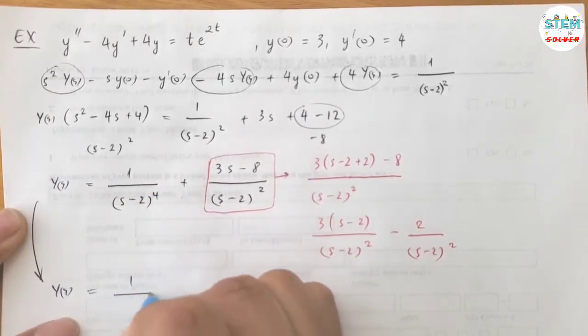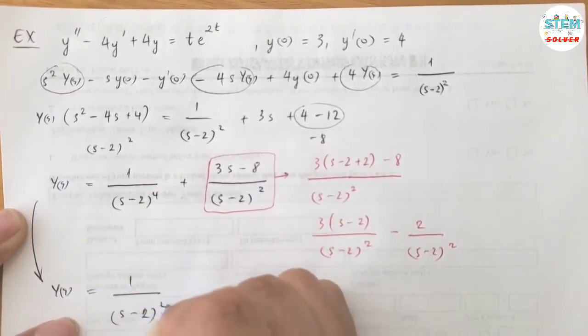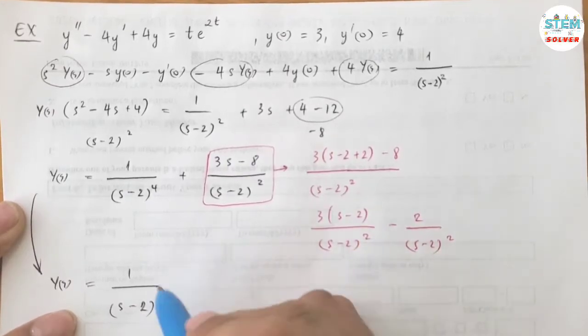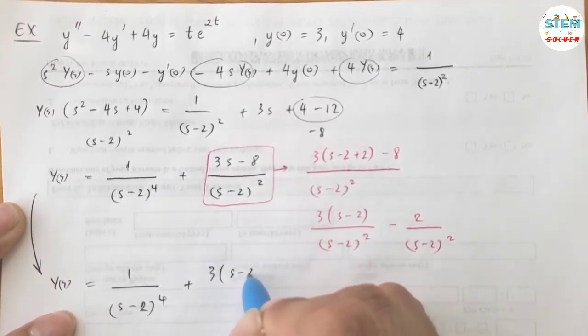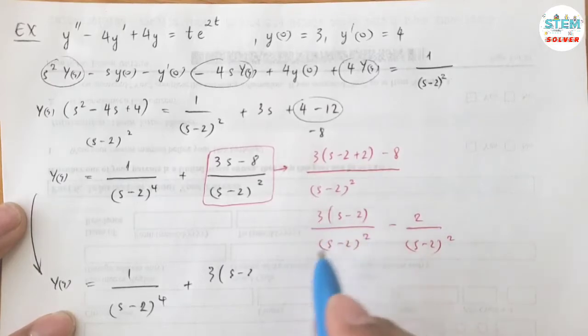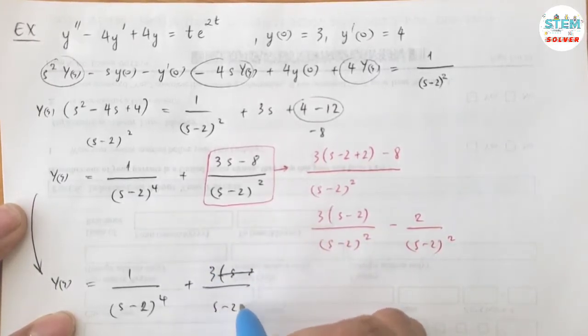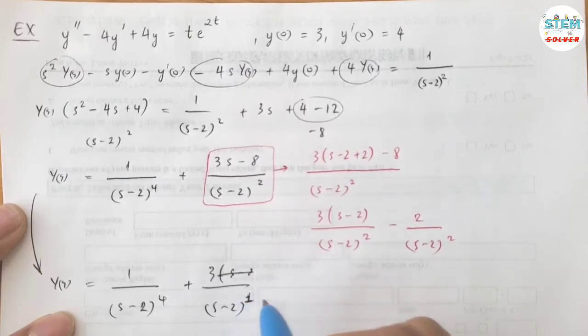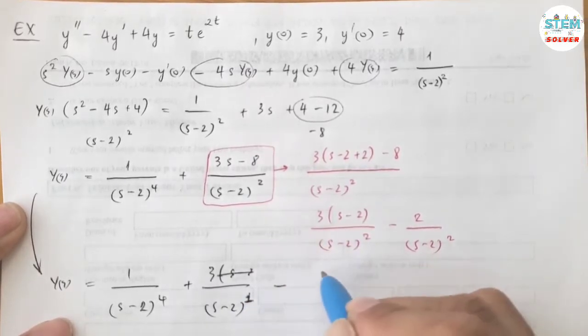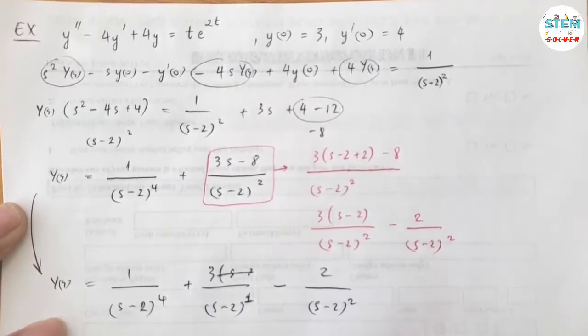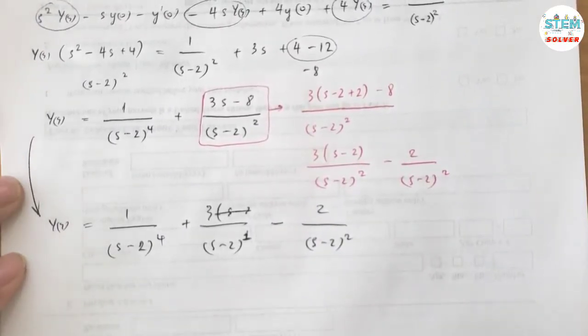Now this becomes 1 over S minus 2 to the 4th. So S minus 2 over S minus 2 squared, so cancel out, we're left with 3 over S minus 2 to the 1st power, minus 2 over S minus 2 squared. Alright, now it's time to take the inverse.